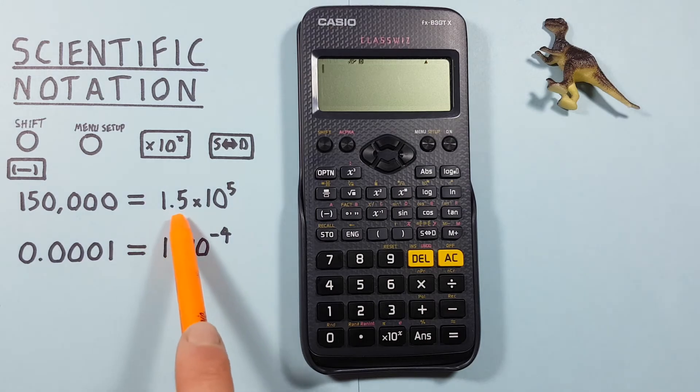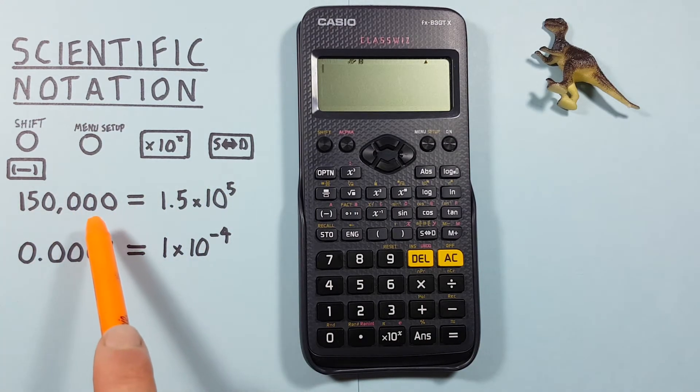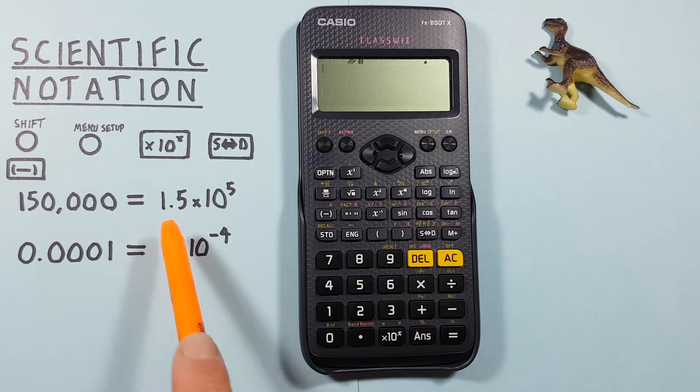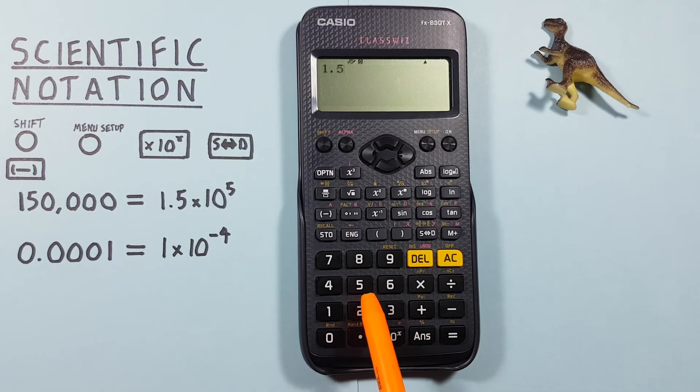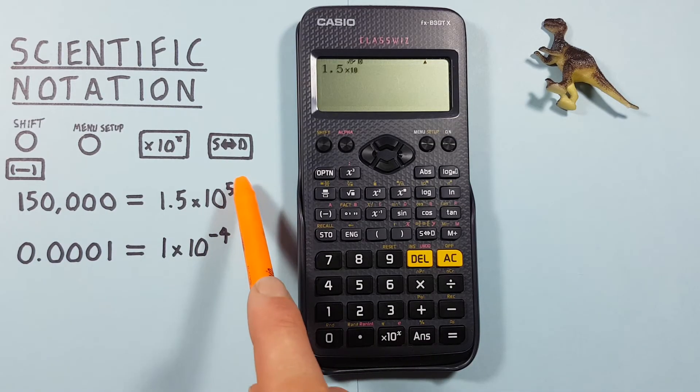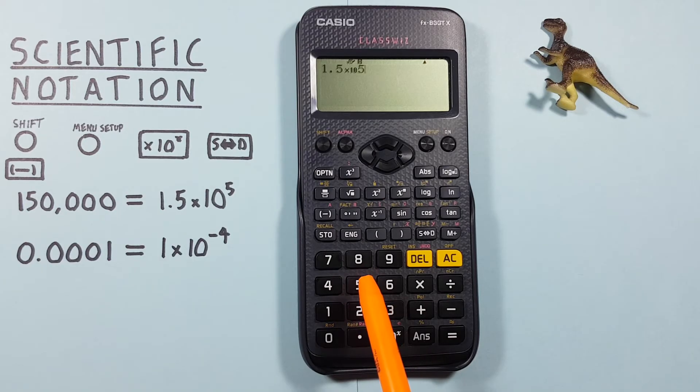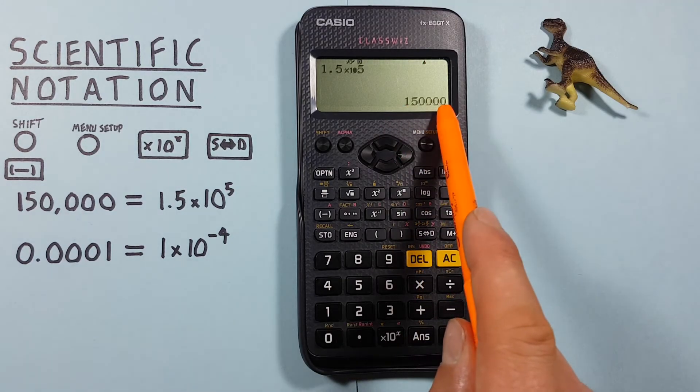But what if we were given the number in scientific notation and wanted to convert it back to normal notation? To do that in normal mode, we enter it like this: 1.5, then we use the times 10 to the x key, and then the exponent. For this one that's 5, so we enter 5 and press equals, and we see that's the same as 150,000.